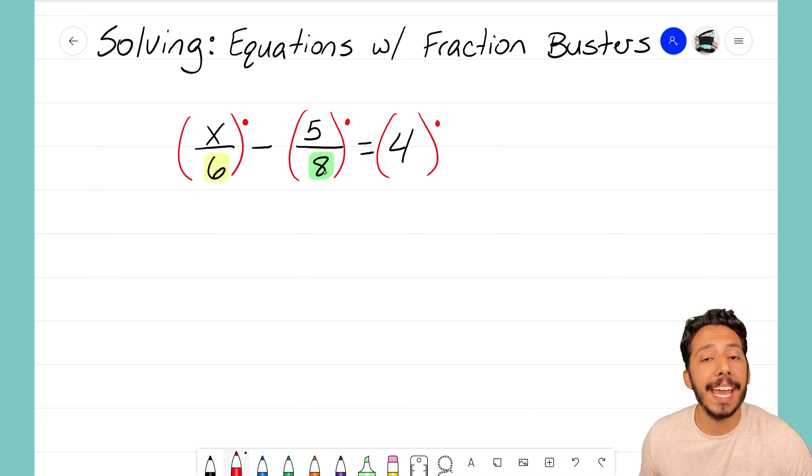6 and 8 can both go into evenly. You're really trying to find a common multiple between 6 and 8 so that when we multiply by the number, we'll be able to cancel out the 6, cancel out the 8, and the fraction will be busted. Now I know a lot of you out there might be thinking, 'Okay, I need a common